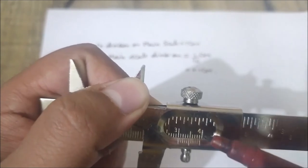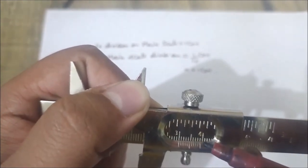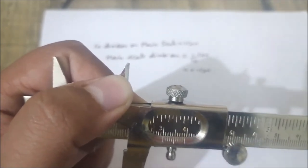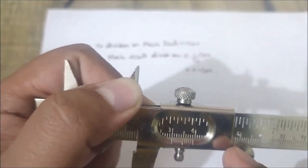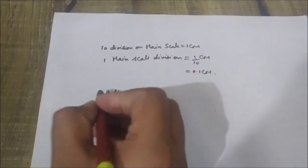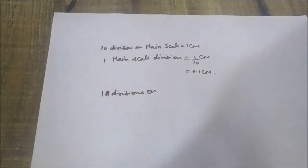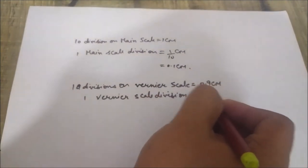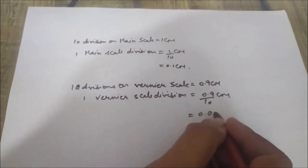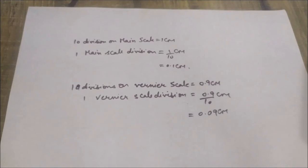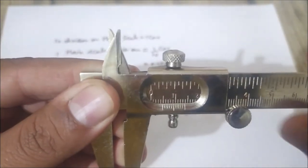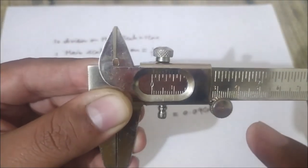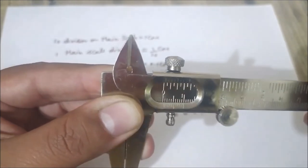By having a close view on the device, you can clearly see that 10 divisions on the Vernier scale coincide with 9 divisions of the main scale. So 10 divisions on Vernier scale equal 0.9 centimeters. Therefore, one Vernier scale division equals 0.9 upon 10 centimeters, or 0.09 centimeter. The gap between one main scale division and one Vernier scale division is called the least count of the device. The formula of least count is: one mean scale division minus one Vernier scale division.